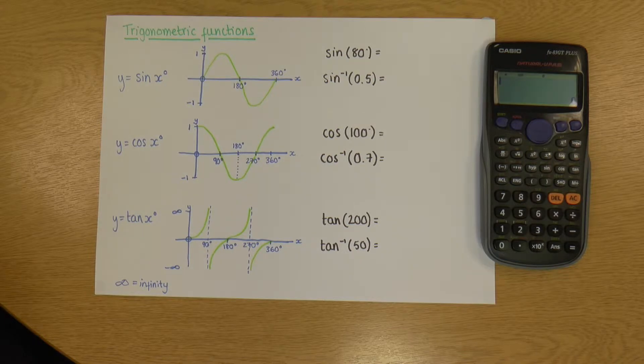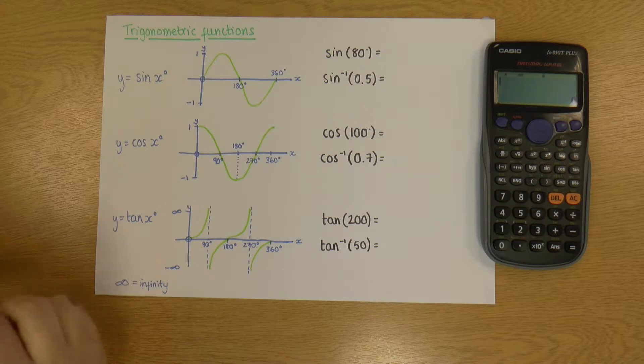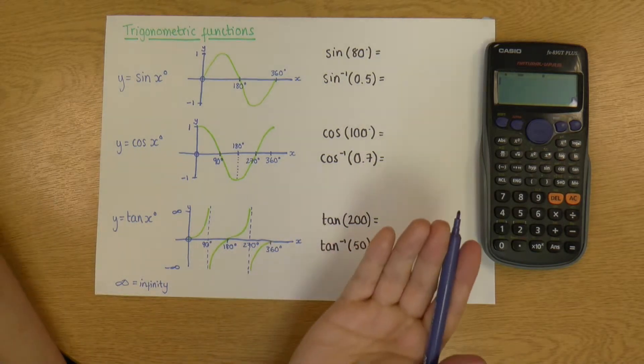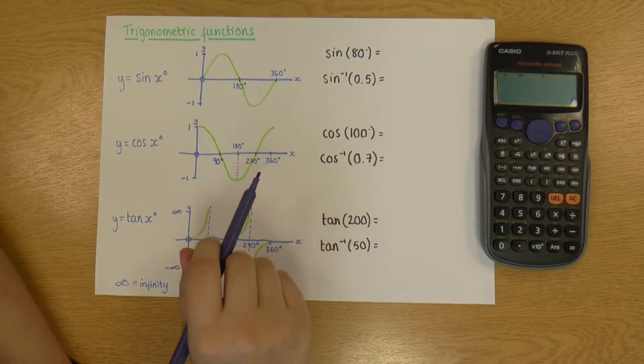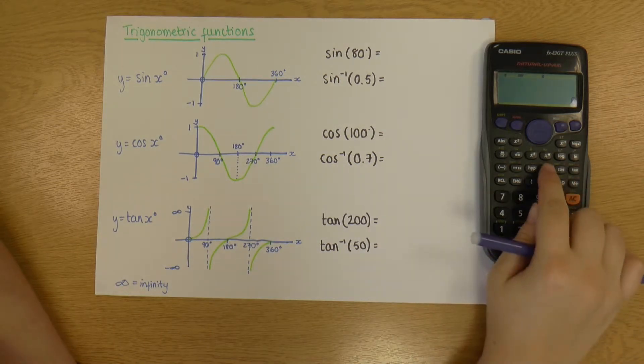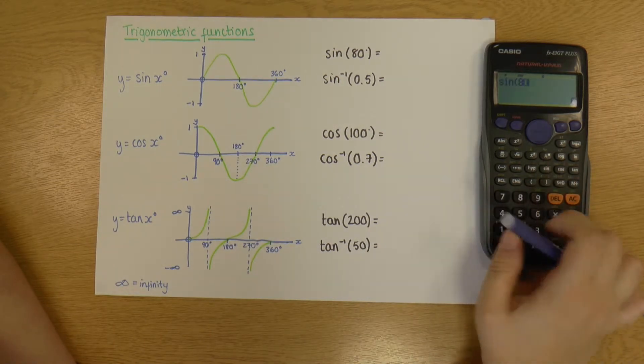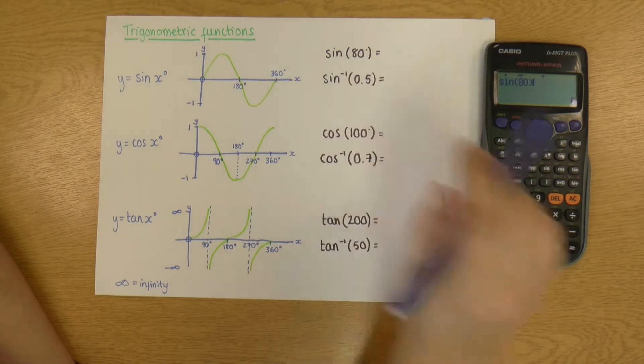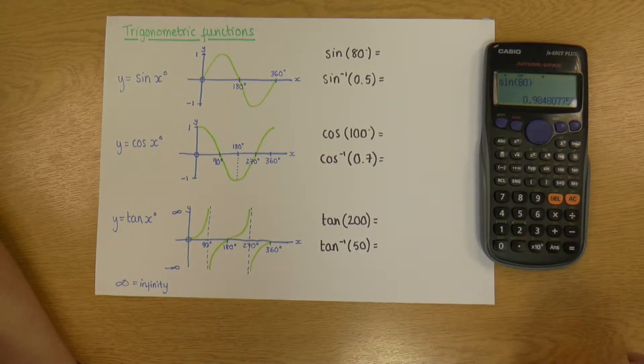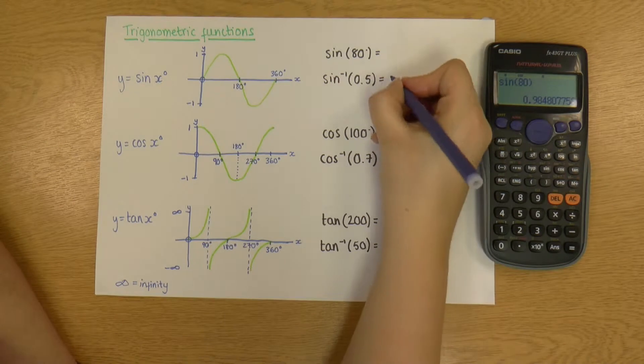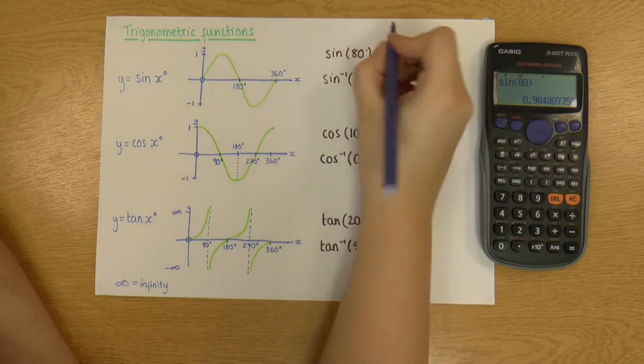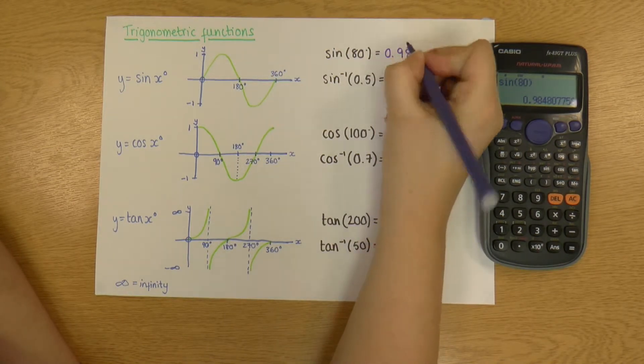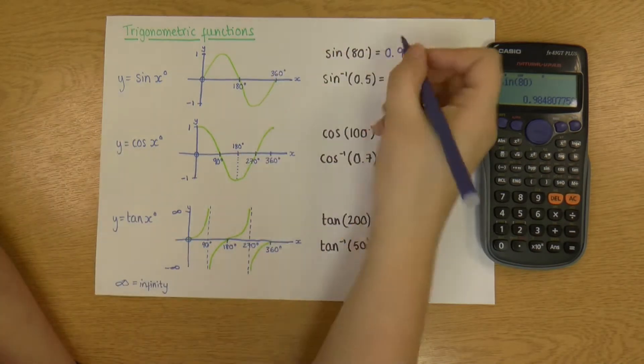So let's start up here with sine 80. To actually get a value for these is pretty easy. We just pop it into a calculator. So if I go sine 80, so it's 80 degrees, sine 80 gives me 0.98. There we go, and that is my answer.